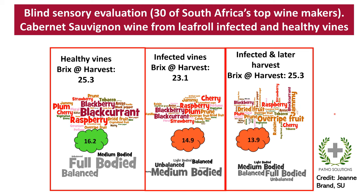Out of a potential score of 20 points, the winemakers gave the wine from healthy plants 16.2, whereas both leafroll-infected wines had lower scores. Looking at the word cloud, the healthy vines had better flavor descriptors — much more clearly defined — and the wines were considered full-bodied and balanced, all very desirable properties. The wines made from leafroll-infected plants were much lesser in comparison.